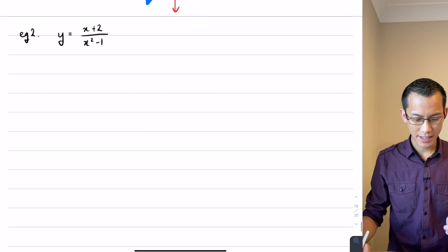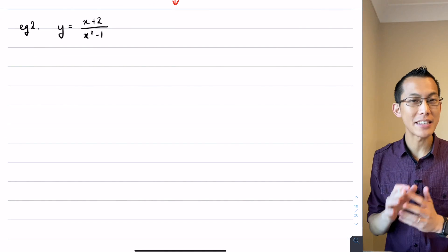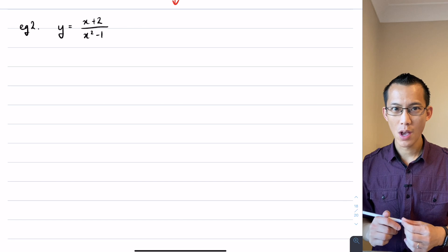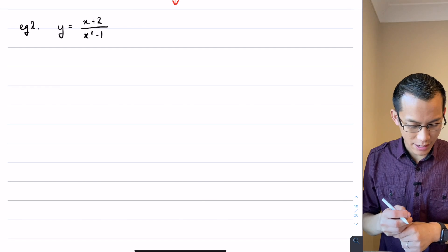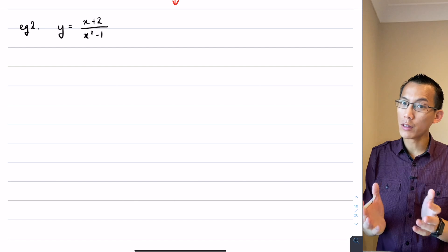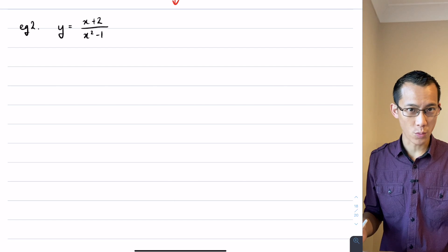Alright, so let's have a look at this next example which is a bit harder but it's still within the scope of what you guys will be expected to do. y equals x plus 2 on x squared minus 1. We're going to look at the same features that we're trying to work out before.